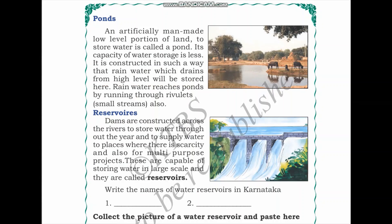The next source of water is ponds. An artificially man-made low-level portion of land used to store water is called a pond. It is a man-made structure constructed at a lower level, and its capacity to store water is less. Rainwater draining from higher ground is stored here, and rainwater can also reach ponds through small streams called rivulets.